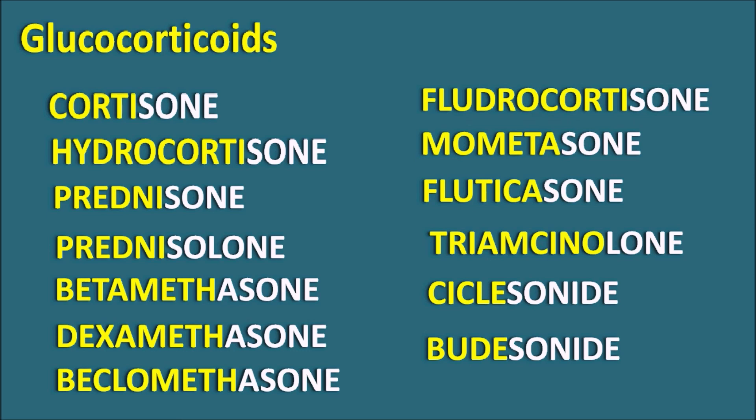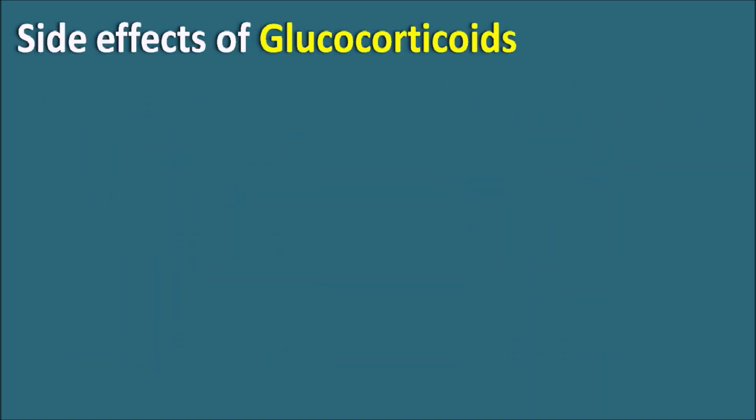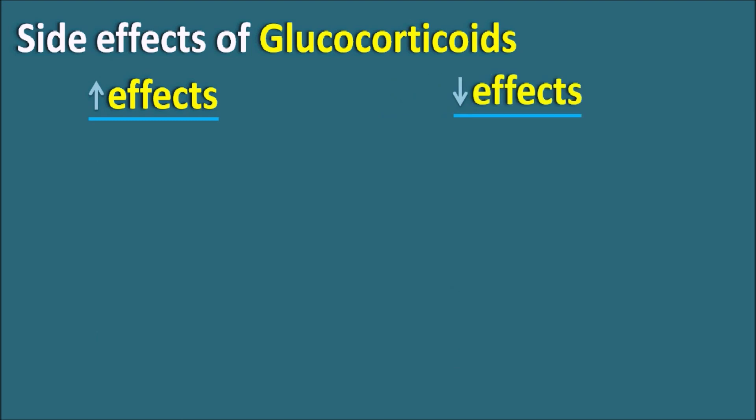But what are the side effects of these glucocorticoids? These drugs can affect various organs in our body. Side effects of glucocorticoids can be classified mainly into two types: where glucocorticoids increase effects, or decrease effects.